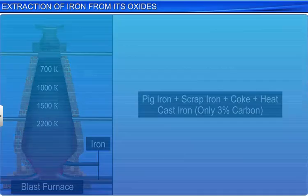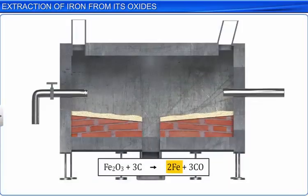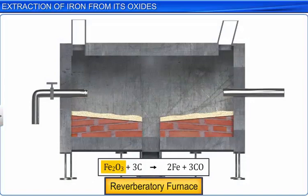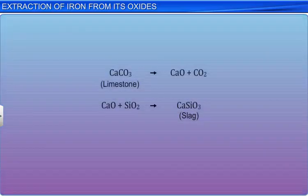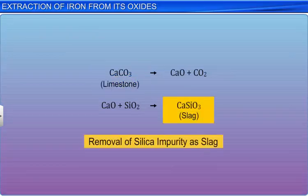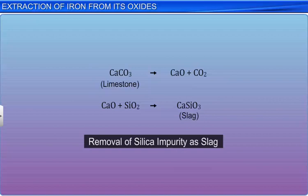Cast iron is heated in a reverberatory furnace lined with hematite, which oxidizes carbon to carbon monoxide to get wrought iron, or malleable iron — the purest form of iron. In this process, limestone is added to remove impurities in the form of slag. The metal is removed and separated from the slag by passing it through rollers.